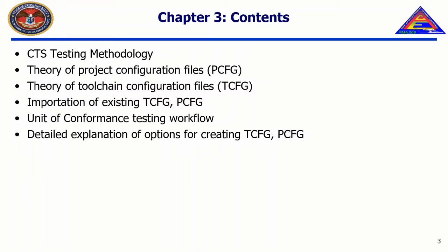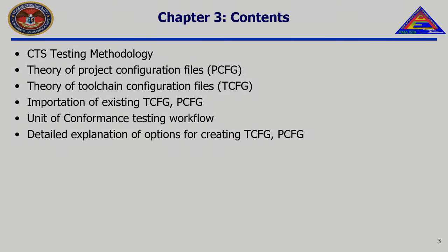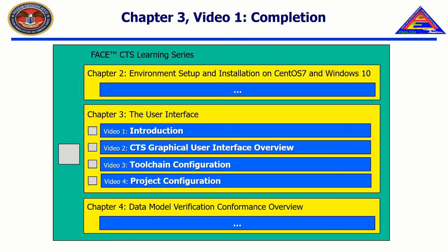In Chapters 5 and 6, we will demonstrate in real time how to test a non-OSS and OSS UOC with the CTS using the knowledge that is conveyed in Chapters 3 and 4. This concludes the introduction. The next video in this chapter is entitled CTS Graphical User Interface Overview, and will detail the UOC testing workflow, the theory of project and toolchain configuration files, introduce the CTS graphical user interface, and introduce the importation and creation of project and toolchain configuration files.